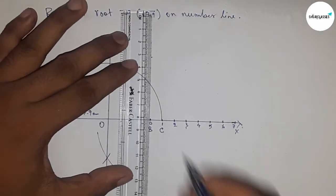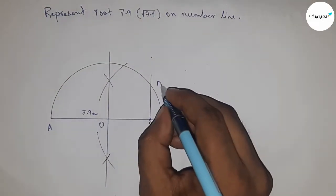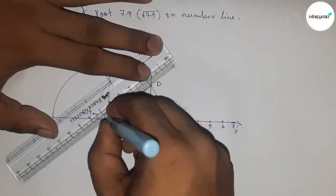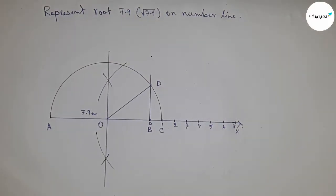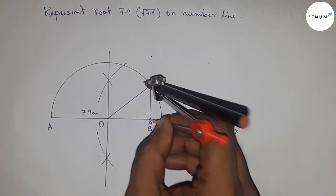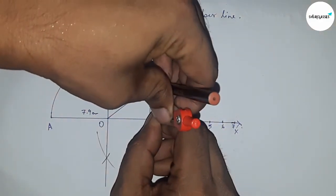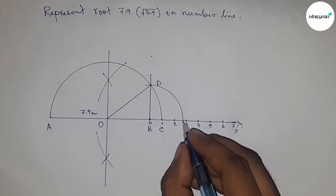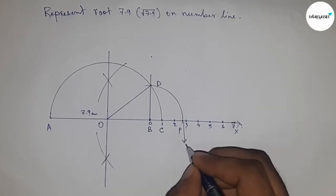Now join this and it meets at point D. Join O and D. Now take the length BD by compass to draw an arc which meets the number line at point P, and this is the representation of root 7.9 on the number line.